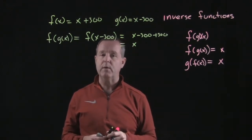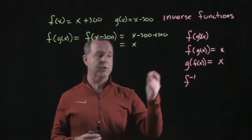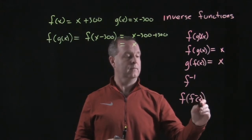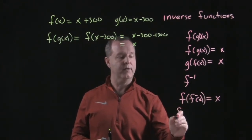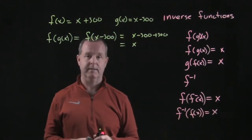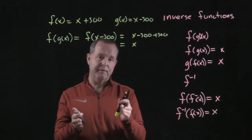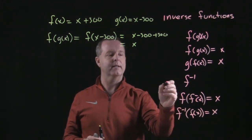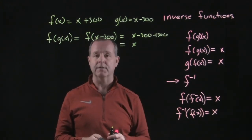Now for inverse functions, we have a notation we'll become accustomed to. We can take f and the inverse of f — if that equals our original value, they are inverses of each other. The notation uses f with a superscript of negative one, which just means f inverse, or the inverse of f.